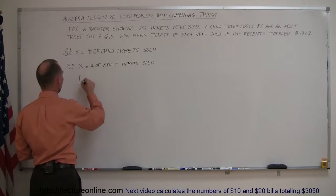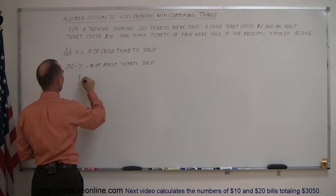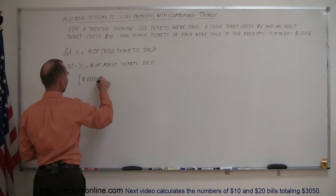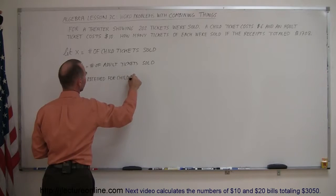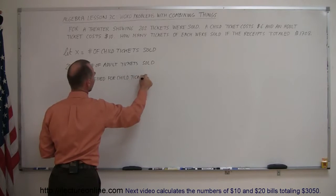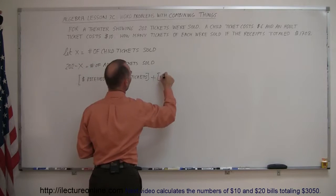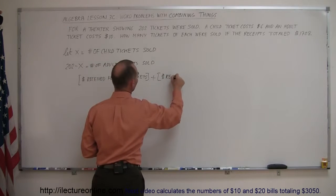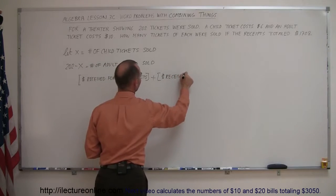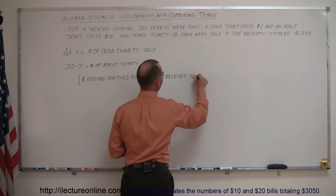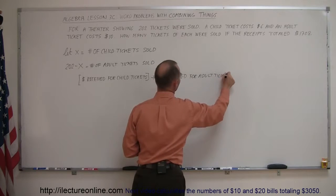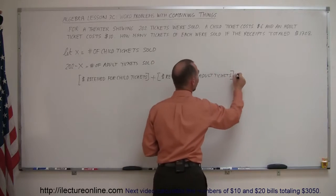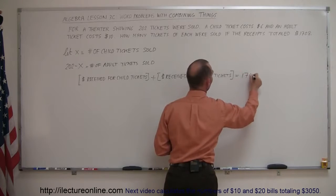So, we can say that the dollars received for children's tickets, so the money received for child tickets plus the dollars received for adult tickets must total up the total amount of money that they received, which is $1,708.